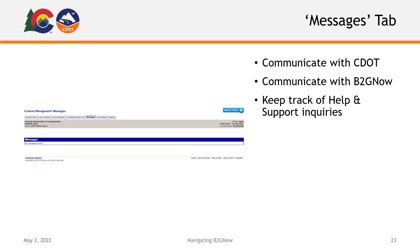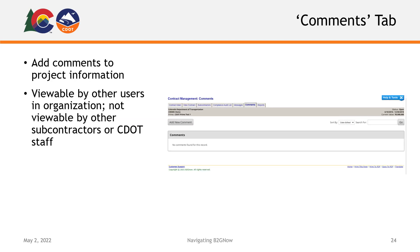The Messages tab is a way to access your communication conducted via the B2GNOW system. Messages sent or received through B2GNOW and any communication with B2GNOW help and support will also be found here. In the Comments tab, you can add comments to your project. These comments are viewable by the other users in your organization but are not viewable by any subcontractors or CDOT staff.